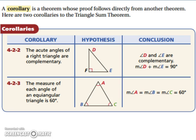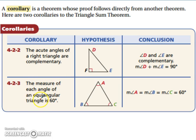Let's look at a few corollaries. A corollary is a theorem whose proof follows directly from another theorem. These all follow from the triangle sum theorem. First, the acute angles of a right triangle are complementary — angles D and E together add up to 90, because 90 and 90 make 180 degrees. Second, the measure of each angle of an equiangular triangle is 60 degrees, since 180 divided by 3 equals 60.